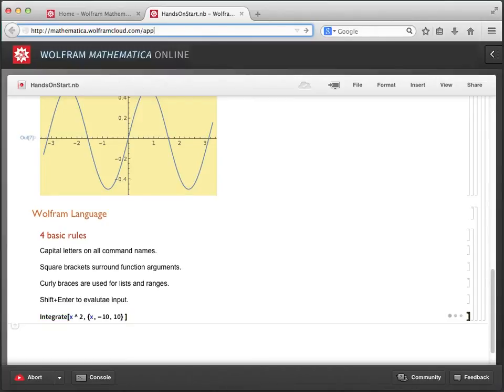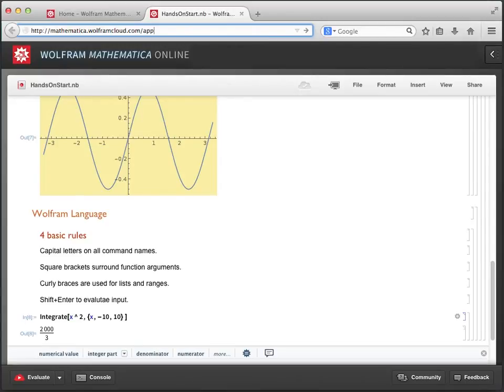Then we use shift enter to evaluate. Before we discuss the result, here are all the rules in action. The command integrate is capitalized. There are square brackets surrounding the function arguments, which is the expression we want to integrate, and the variable we want to integrate with respect to. We see that the interval we integrated over is placed in a list containing the variable x, and the minimum and maximum, and we use the shift enter to evaluate the input.